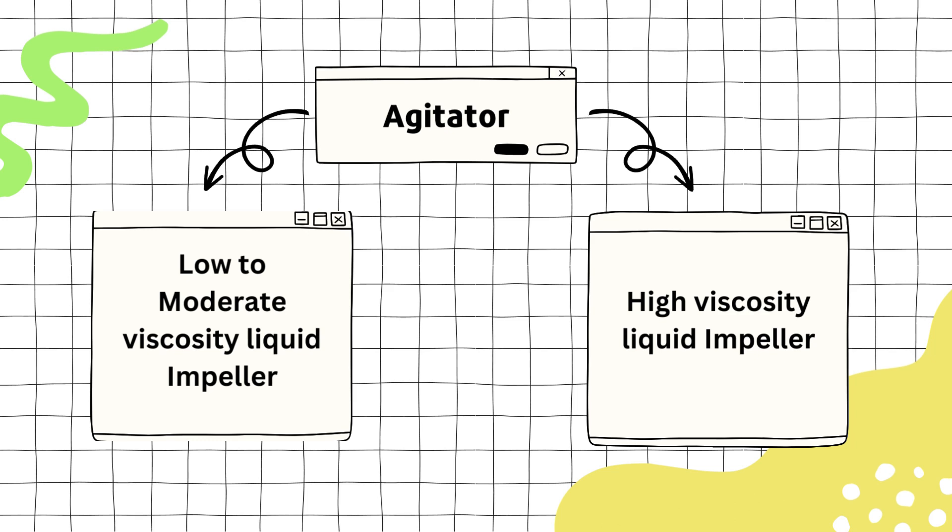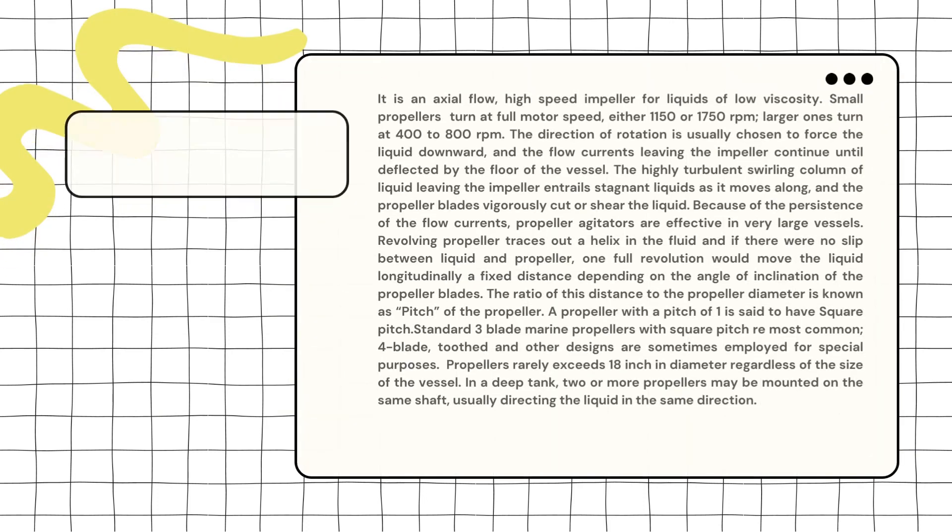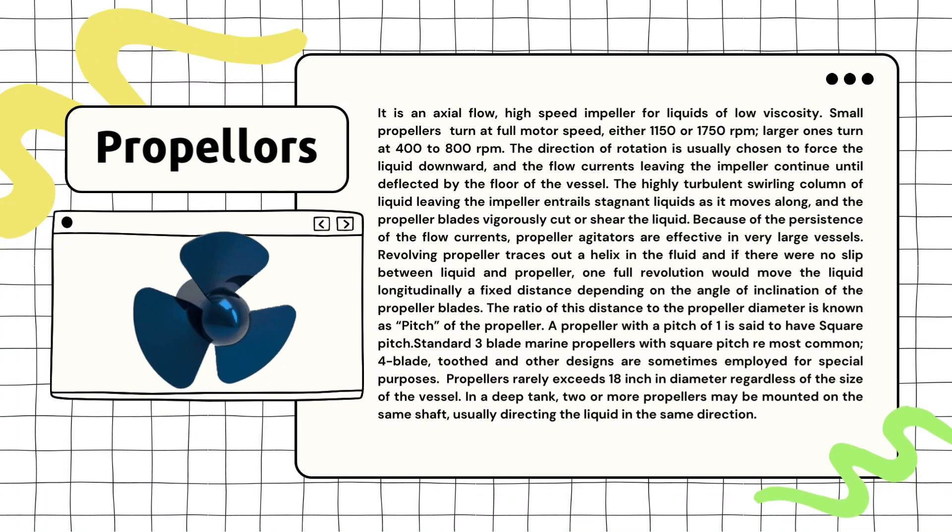Now we will individually discuss a few types of agitators which are widely used. The first type is the propeller. Think of the propeller like the ones on boats, but here consider the same visualization for a tank.